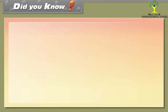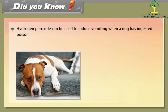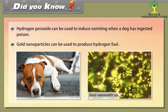Did you know? Hydrogen peroxide can be used to induce vomiting when a dog has ingested poison. Gold nanoparticles can be used to produce hydrogen fuel.